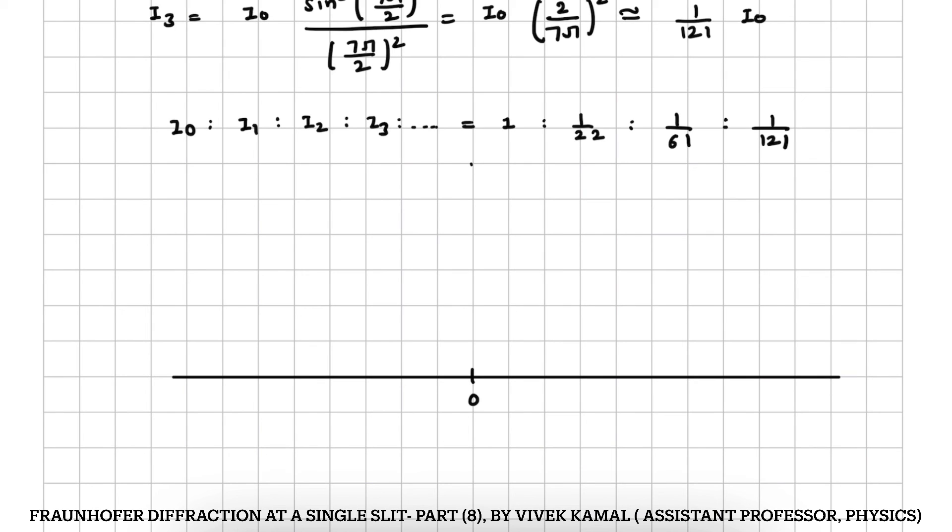When we create the intensity distribution graph, the secondary maxima's intensity rapidly decreases.